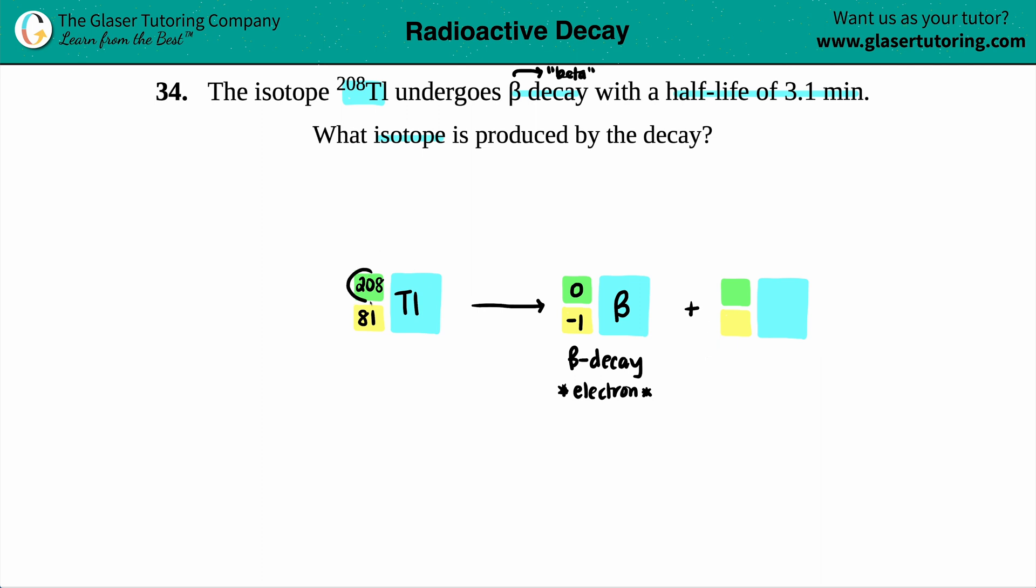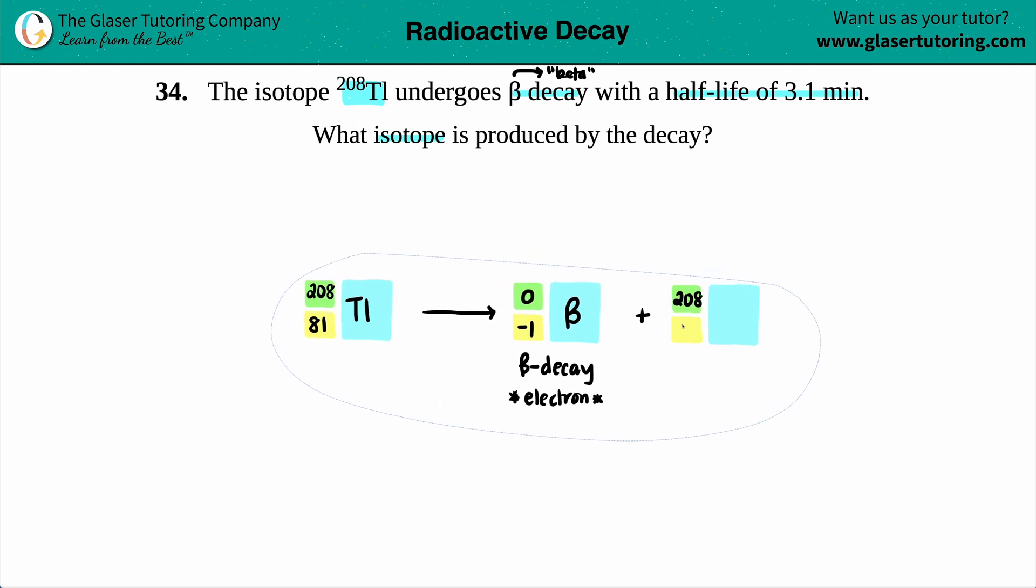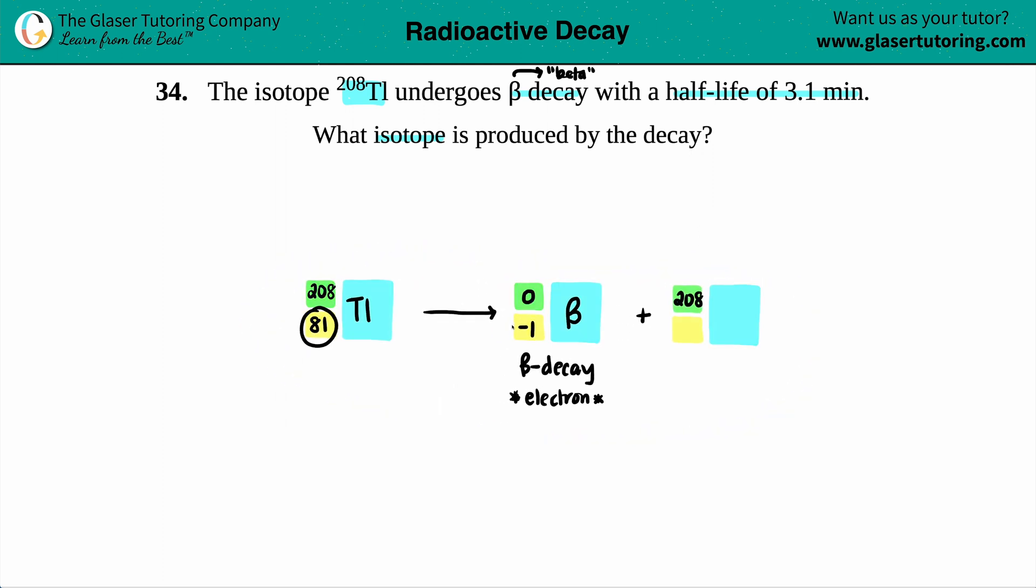Well, let's see. If my total on the left side is 208, zero plus what will get me 208? Yeah, 208.